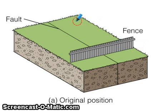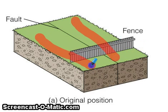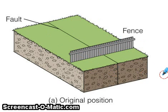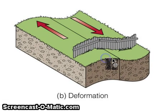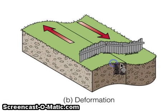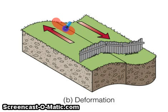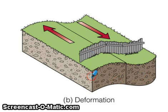Along the fault, the rocks on both sides are always moving but occasionally they can get stuck. If they were to get stuck, the pressure would continue to build and the rock masses on either side of the fault would stretch.